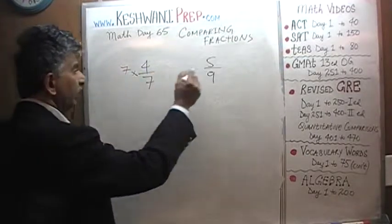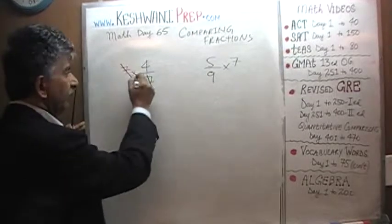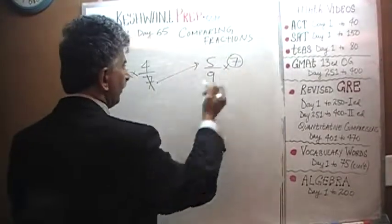Multiply both fractions by 7. That 7 is going to kill that 7. It reappears over here. This 7 ends up over here.